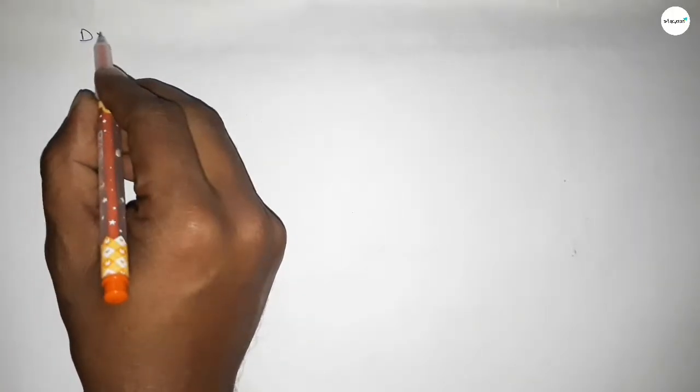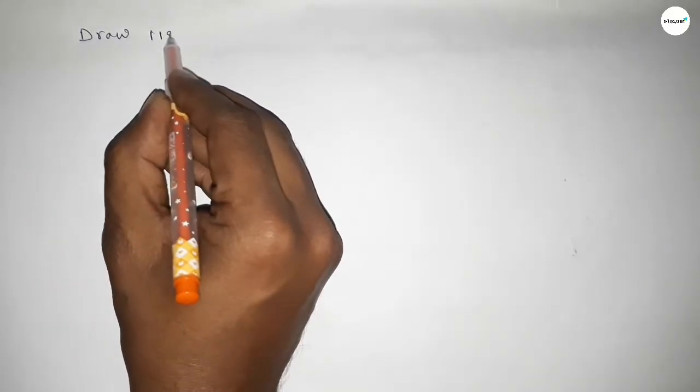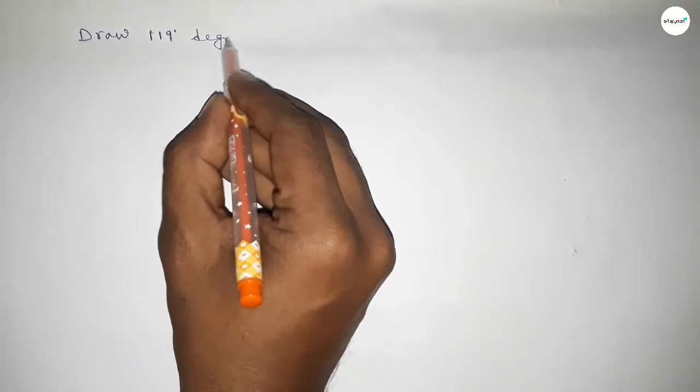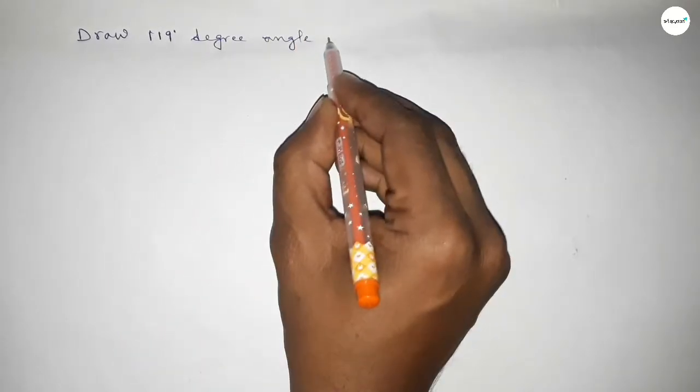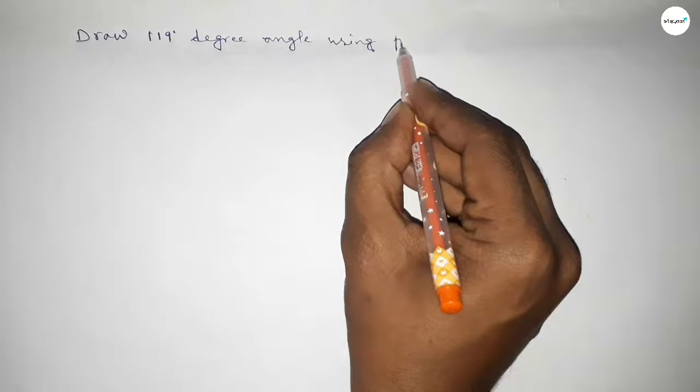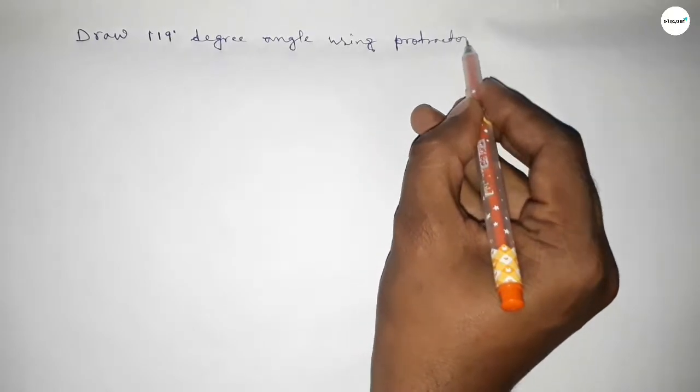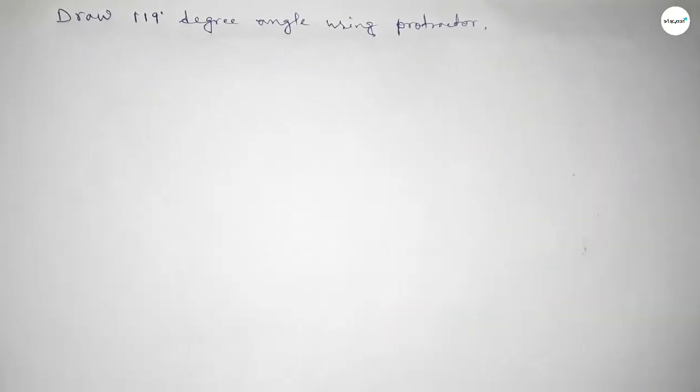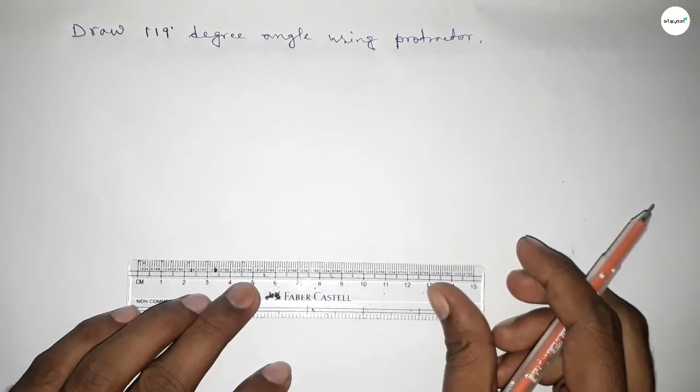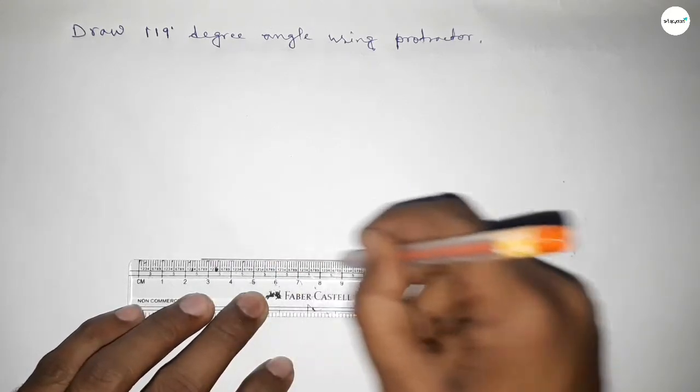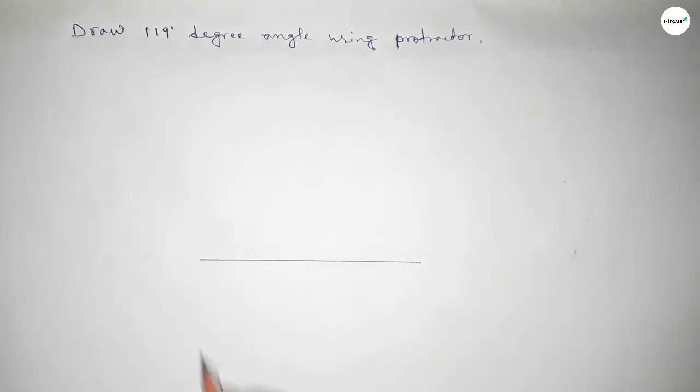Hi everyone, welcome to SI share classes. Today in this video we have to draw 119 degree angle by using protractor. So let's start the video. First of all, we have to draw here a straight line of any length.